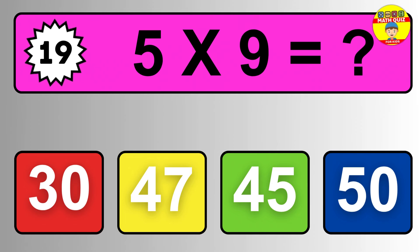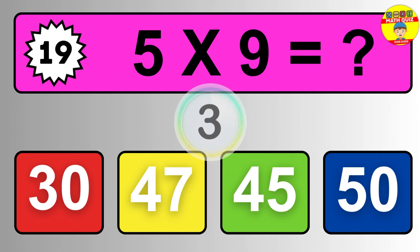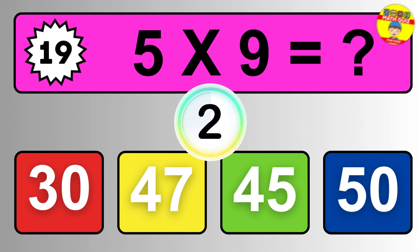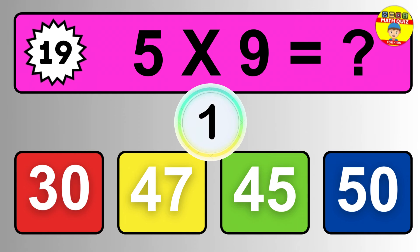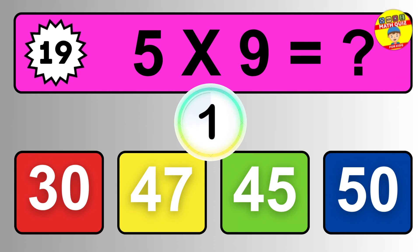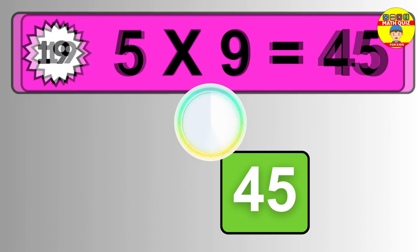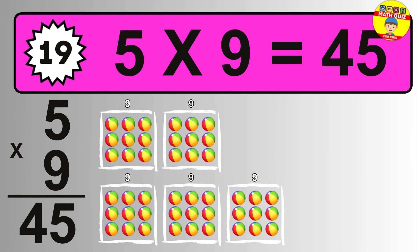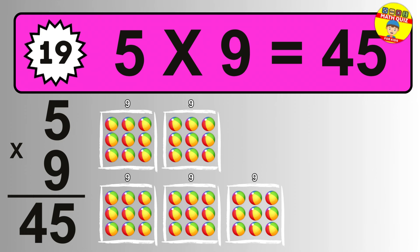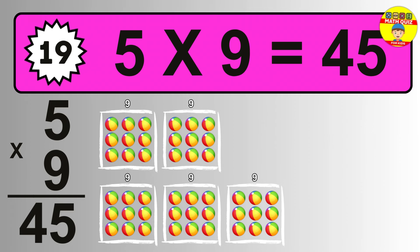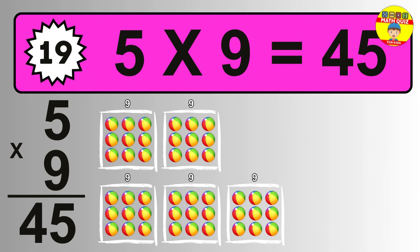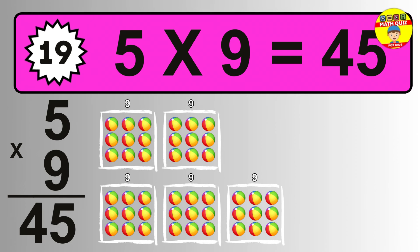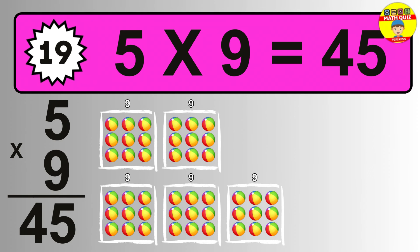Question nineteen. Five times nine equals what? The answer is five times nine is 45. To calculate, we have five groups with nine balls each one. So how many balls do we have? 45 balls.